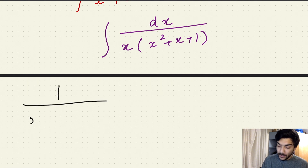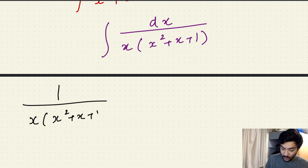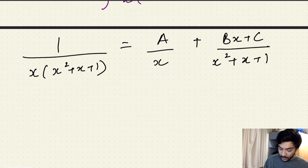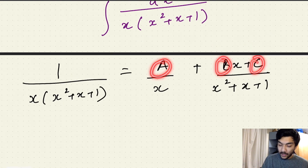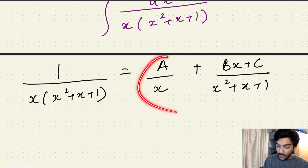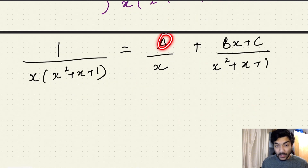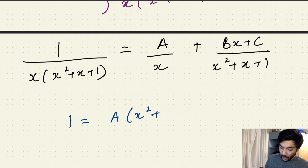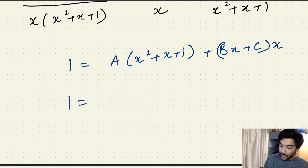We can convert one over x times (x squared plus x plus one) as simply A over x plus (Bx plus C) over (x squared plus x plus one). Now we can solve for A, B, and C to simplify this expression. We'll compare the numerator on the left-hand side with the numerator on the right-hand side, equating one with A times (x squared plus x plus one) plus (Bx plus C) times x.